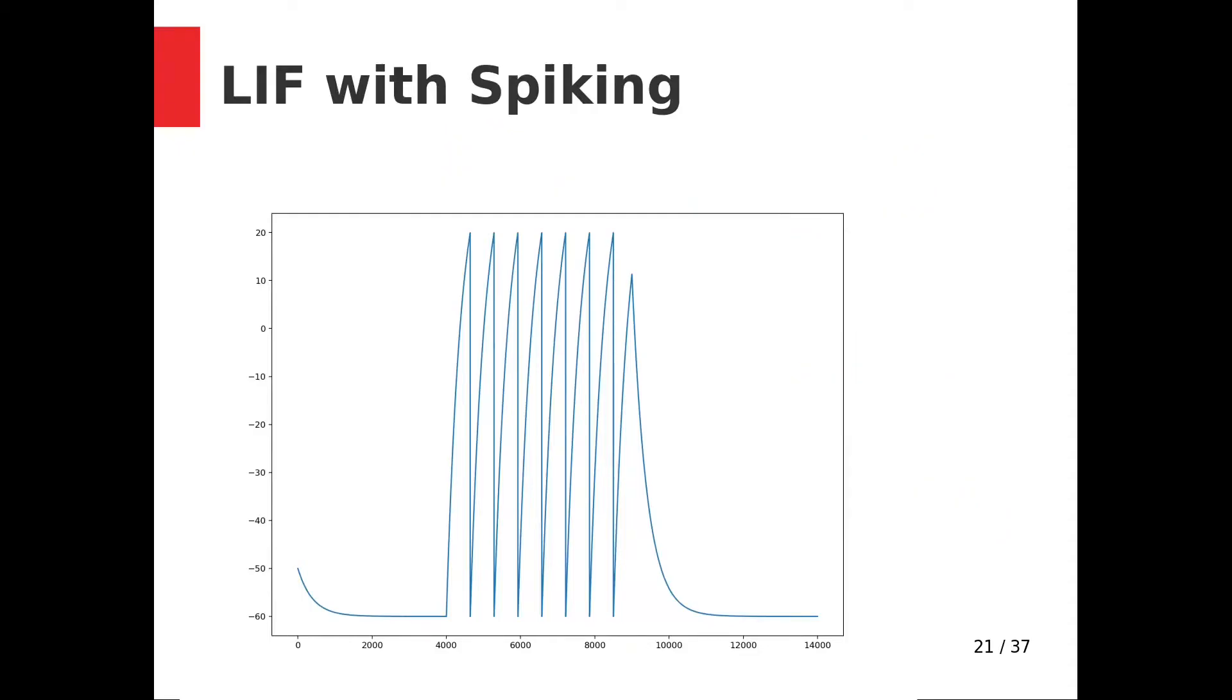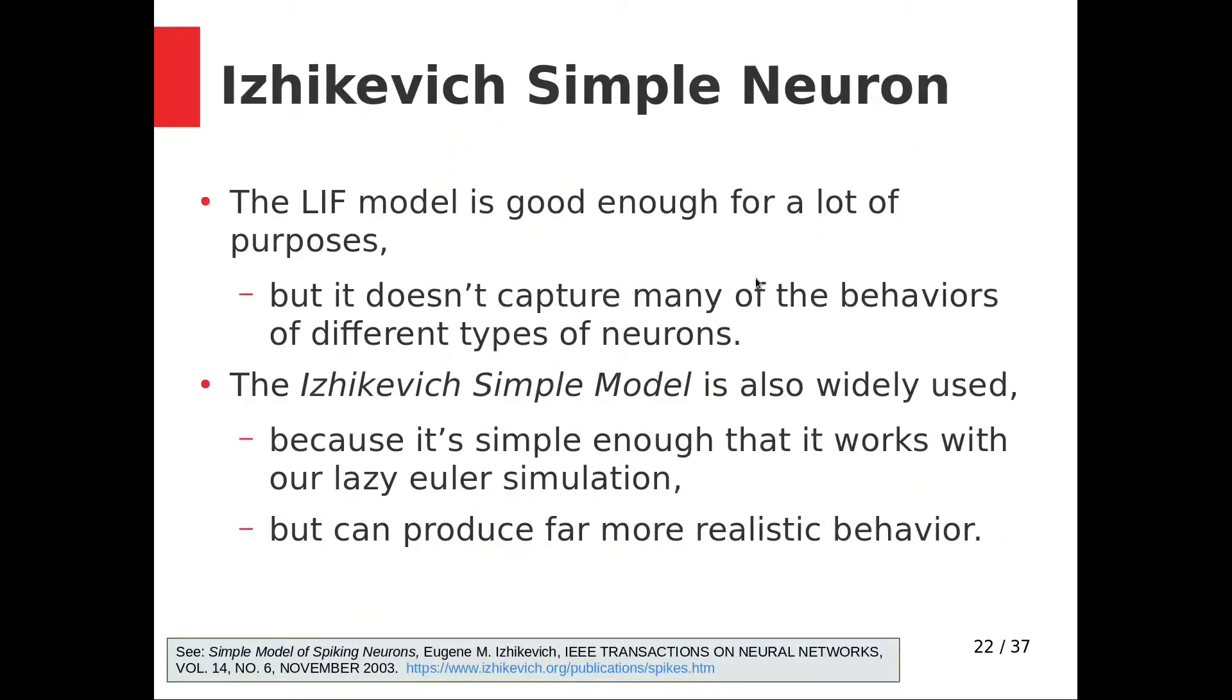There is another model, the Izhikevich simple neuron, that is still very, very simple. It is still very simple. It has two variables, v and u, where u is a recovery variable.